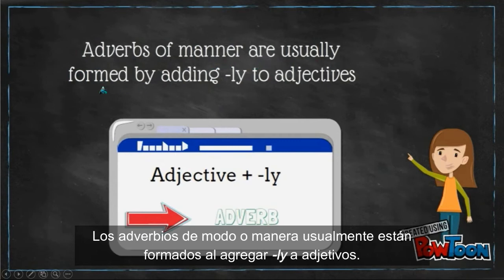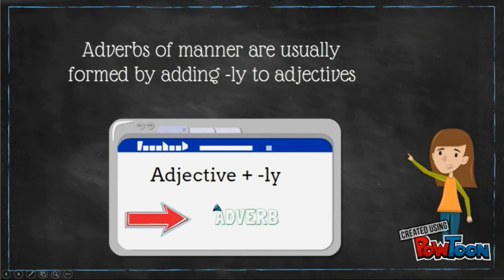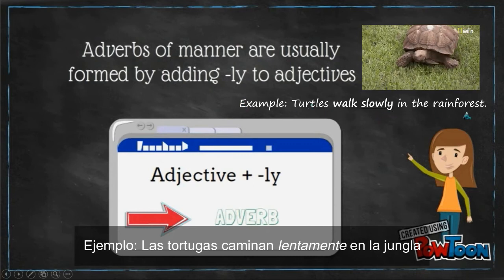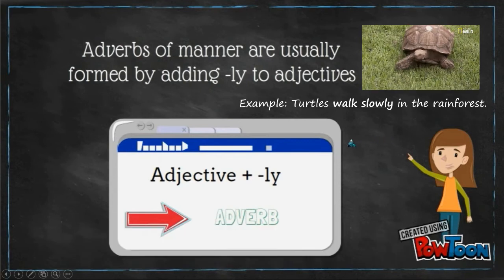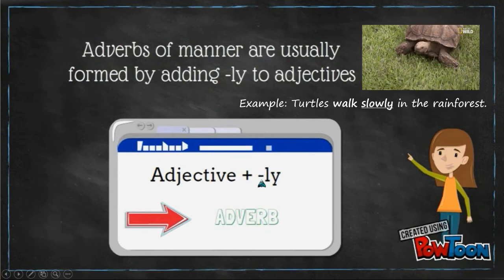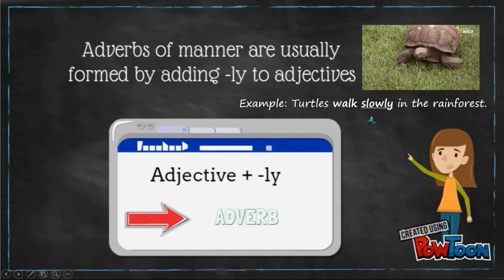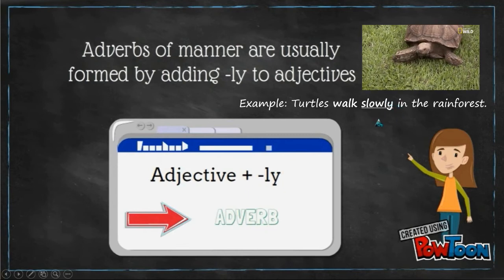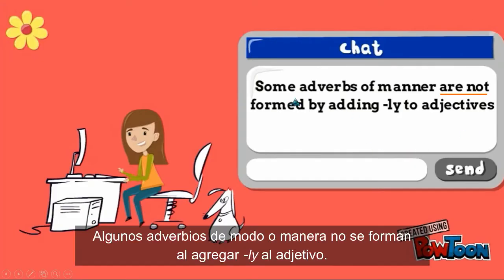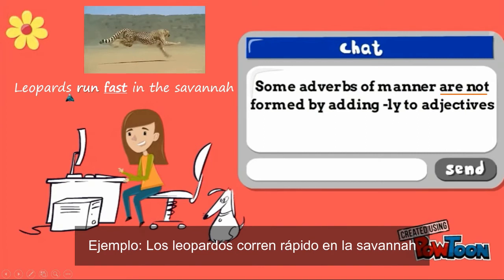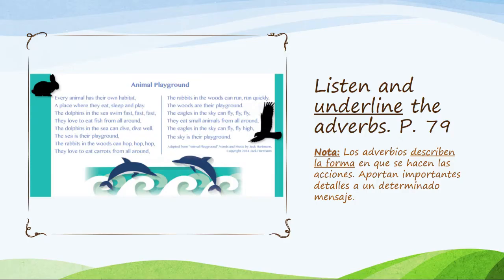We use adverbs of manner to describe or give information about action verbs — they often answer the question ¿cómo? — how was the action done? Adverbs of manner are usually formed by adding -ly to adjectives. For example: turtles walk slowly in the rainforest — slow plus -ly equals slowly. Some adverbs of manner are irregular and are not formed by adding -ly. For example: leopards run fast in the savanna.